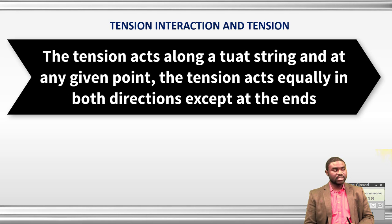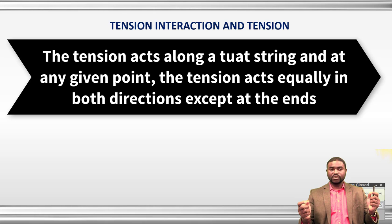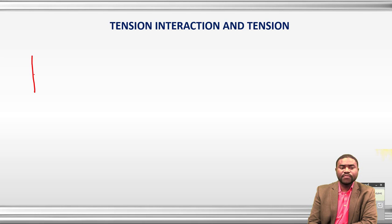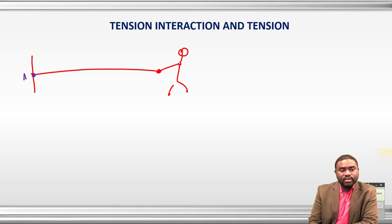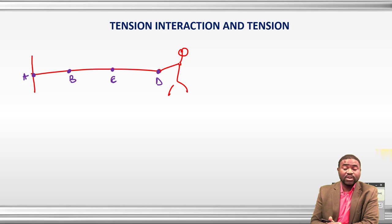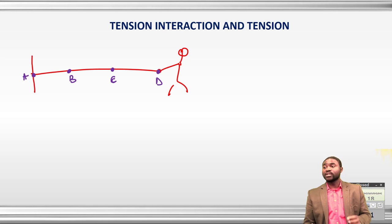At any given point, tension always acts in opposite directions. If Little Johnny is pulling a string, the tension at point A is the same as the tension at point B, which is the same as at C, which is the same as at D — as long as the string is massless. In a massive string, the tension varies depending upon the location in the string.